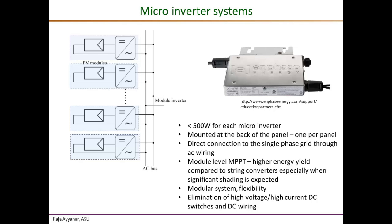The drawbacks of microinverters include cost — they do not scale up cost-effectively. They also tend to have slightly lower efficiency, around 95% CEC efficiency versus 97% for string inverters and 98% for central inverters. Since microinverters are mounted on the PV module, they are subjected to the same harsh environments — high temperatures, large temperature cycling, moisture, and so on. If they do fail, since they are placed on the rooftop, they are also fairly difficult to service.